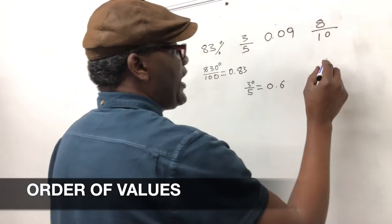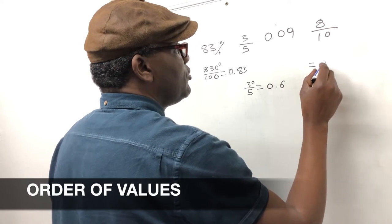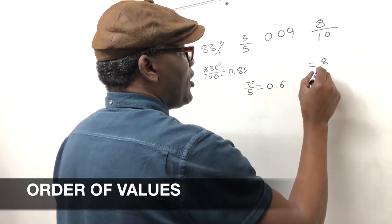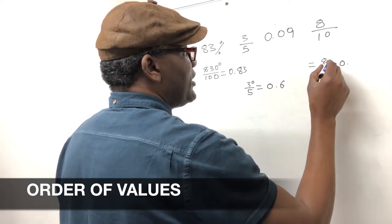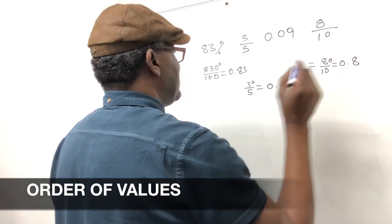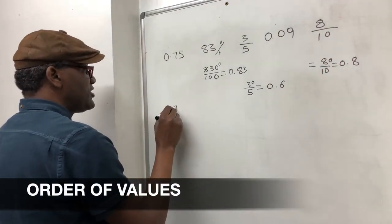And you've got eight over ten is equal to, eight over ten is equal to 0.8.